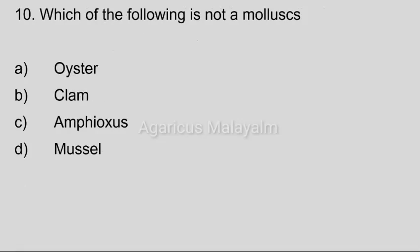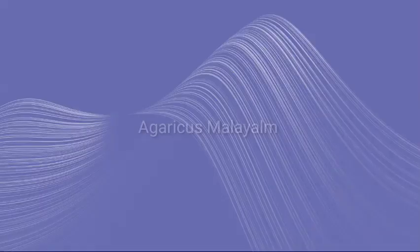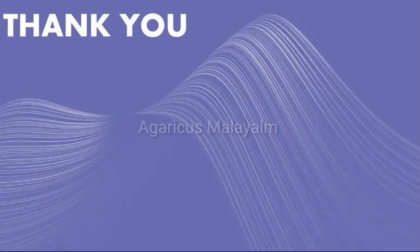Tenth question: Which of the following is not a mollusk? Option A: oyster; option B: clam; option C: Amphioxus; option D: mussel. Correct answer: option C, Amphioxus, as it belongs to phylum Chordata, not phylum Mollusca.